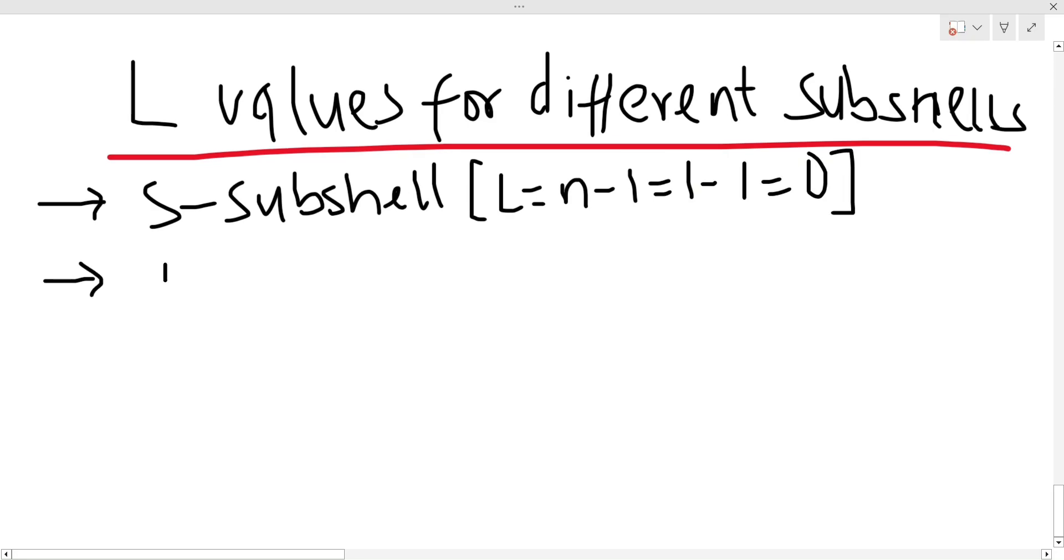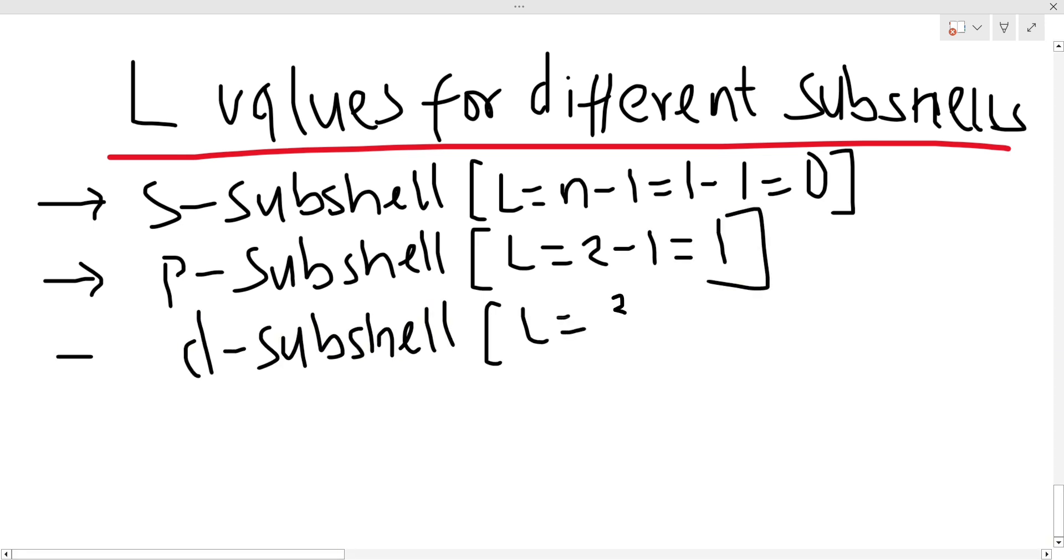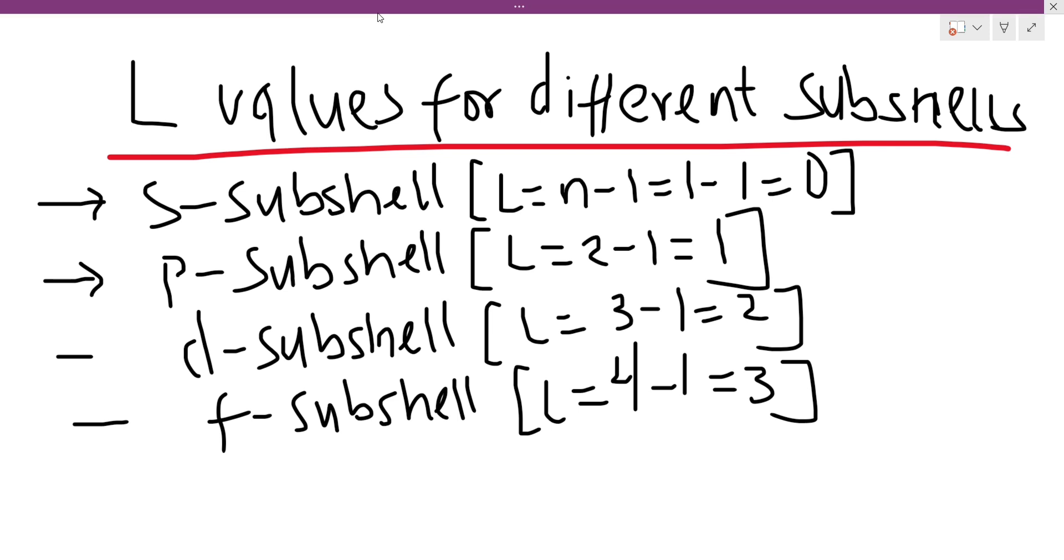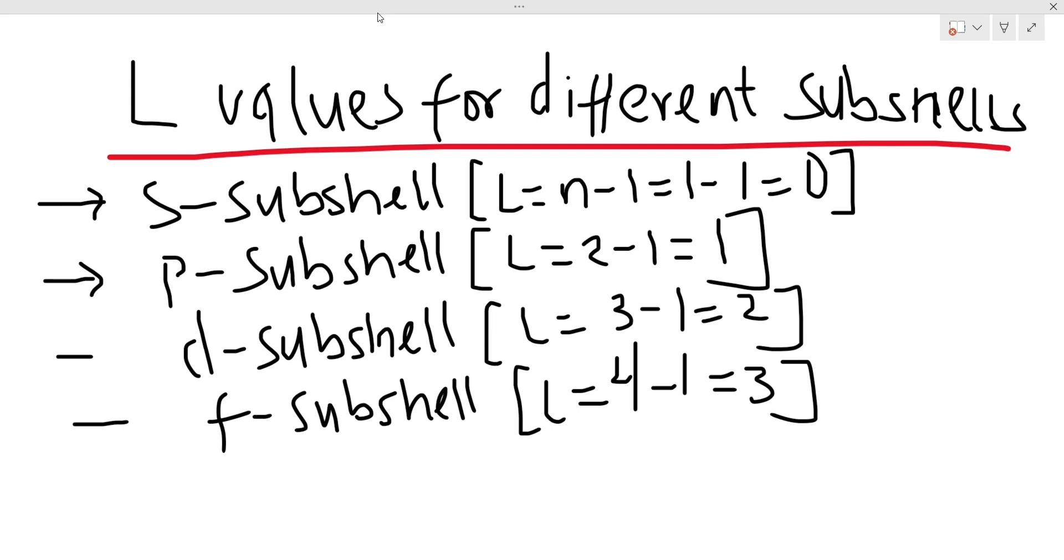For the d subshell, 3 minus 1 which is equal to 2. And for the f subshell, 4 minus 1 which is equal to 3. So the s, p, d, f subshells have azimuthal quantum numbers equal to 0, 1, 2, 3 respectively.